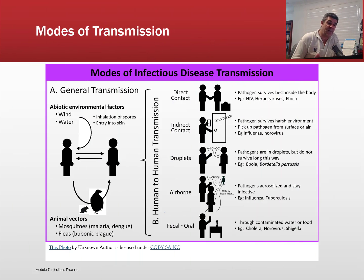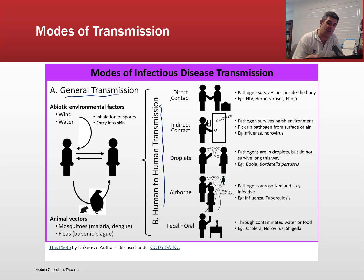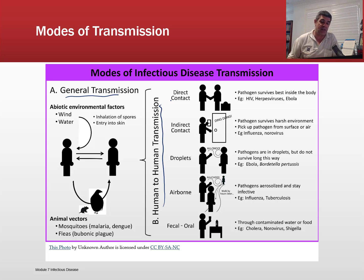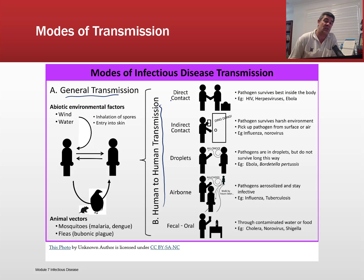This graphic gives a nice overview of the general types of transmission and specific human-to-human transmission. That includes all the ones we've talked about: direct contact, indirect contact, droplet sharing, airborne transmission, and sometimes fecal-oral. And then also through abiotic factors — wind, water, and animal vectors. There's quite a range of ways pathogens can move from one host to another.